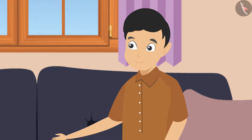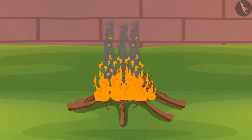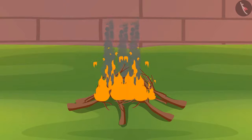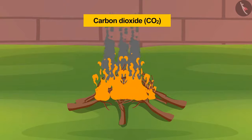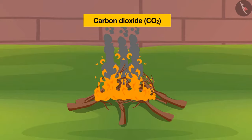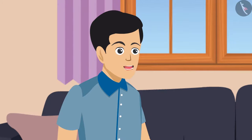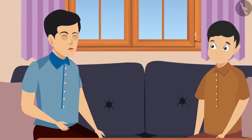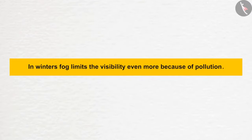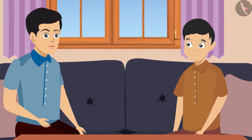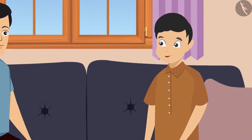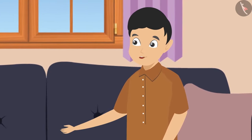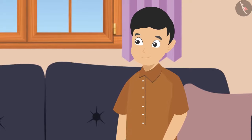What an interesting experiment! Have you seen that whenever we burn wood, it gives black fumes? That fume is a mixture of many gases, of which CO2 is the main component. Yes, I heard in TV news that the pollution level of cities like Delhi and Lucknow often rises, in which carbon dioxide is the main component, due to which people struggle to breathe and can only see up to short distances. In winters, fog limits visibility even more. When we travel up towards the sky, the quantity of oxygen and air decreases with height, due to which breathing is tougher on high mountains.